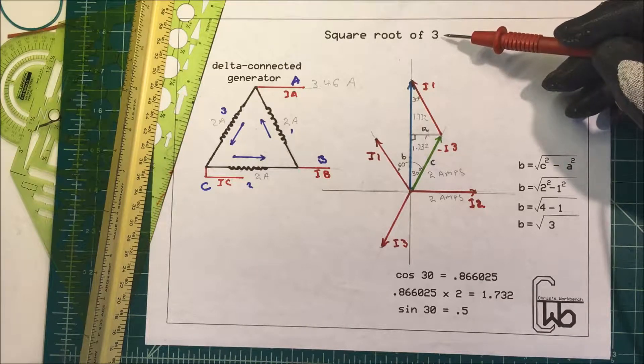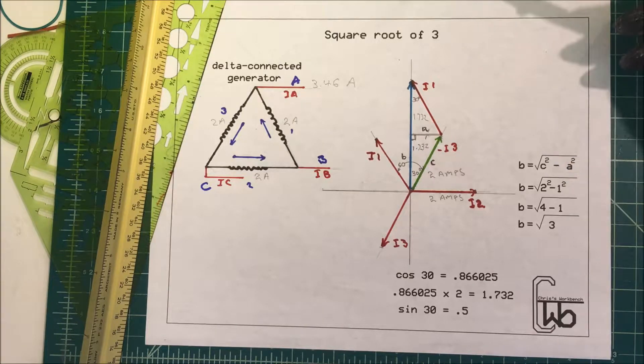Let's talk about the square root of three and where that comes from. In electronics we memorize the square root of two, it's 1.414, but in three-phase power we memorize the square root of three, it's 1.732.